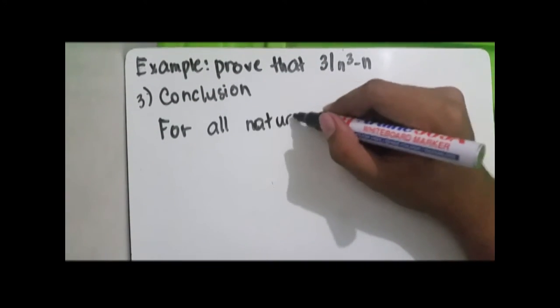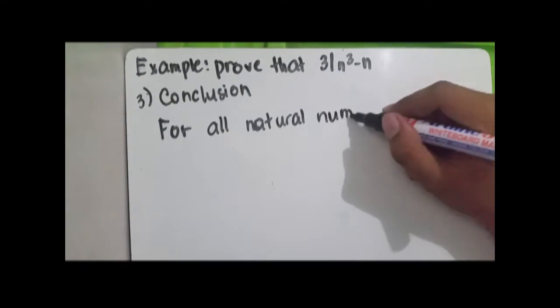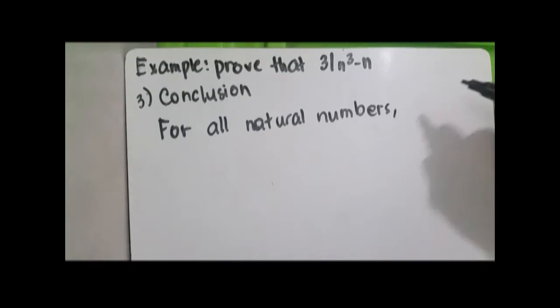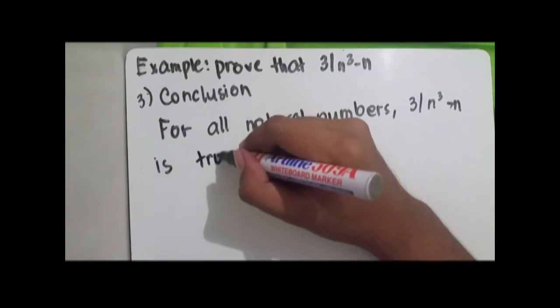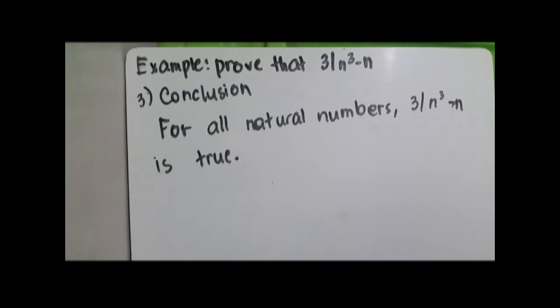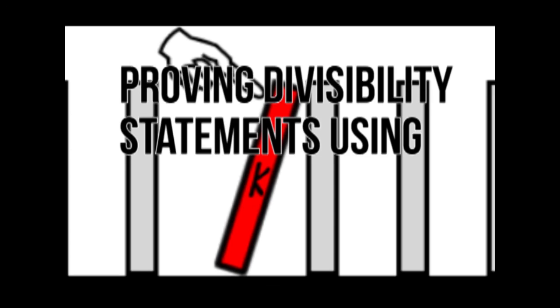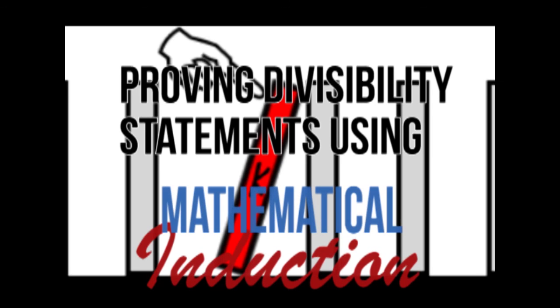For all natural numbers, the conjecture that 3 divides n cubed minus n is true. Thank you very much for watching. If you like it, please leave a comment or subscribe to my channel. See you on the next video.